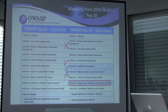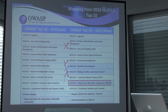Everything below CSRF moved up by one. We merged the cryptographic storage and cryptographic transport items together into sensitive data exposure, essentially saying: if you've got sensitive data, you've got to protect it — whether it's on the wire, in storage, or in the browser.